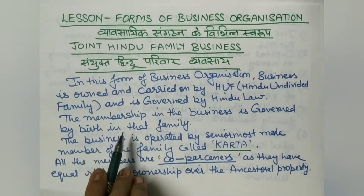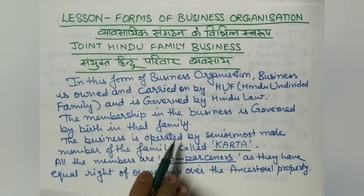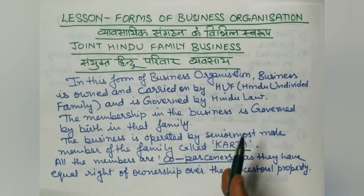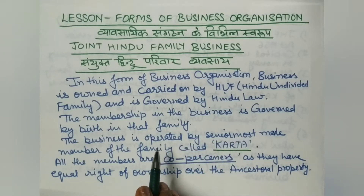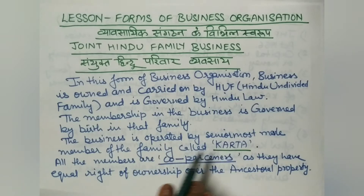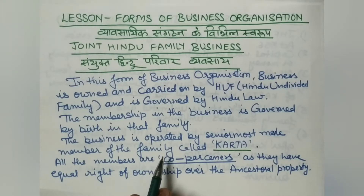Membership in the business is governed by birth in the family. The business is operated by the senior-most male member of the family, called the Karta. The co-parceners have equal rights of ownership over ancestral property.